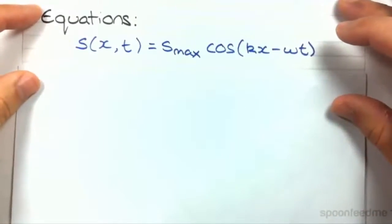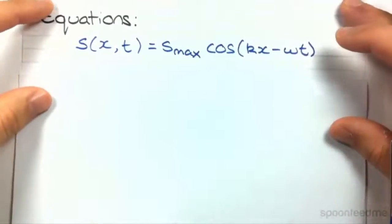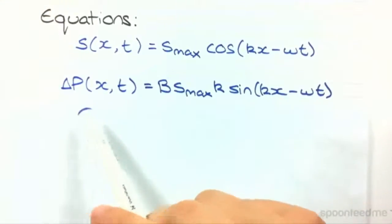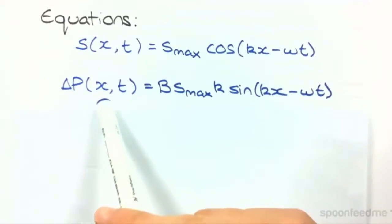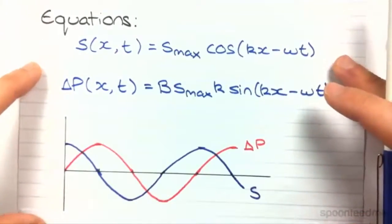The pressure equation can be found from quite a complicated and unnecessary-to-know derivation, but it looks like this. Difference in p as a function of x and t equals B, which is the bulk modulus. It's just a constant that's experimentally determined. It's an elastic property of the medium through which the sound wave is moving through, and we'll look at that a bit more in just a moment. So, it's B times smax, that amplitude, times k, the wave number, times sin(kx - ωt). Right, so what we see from these two equations...